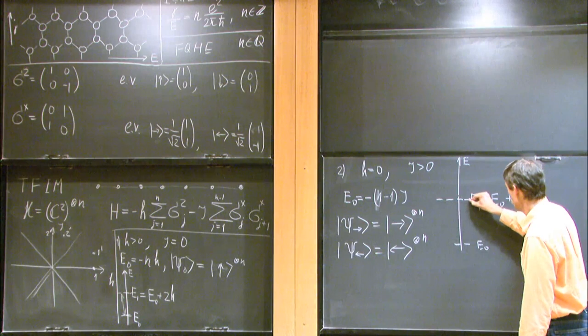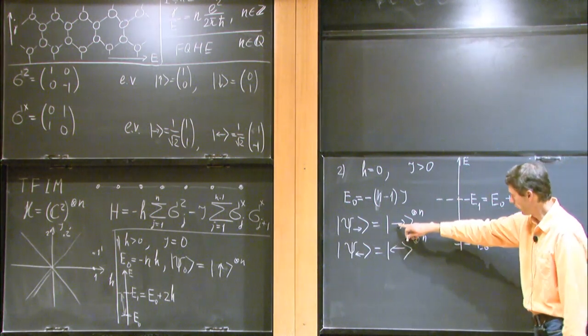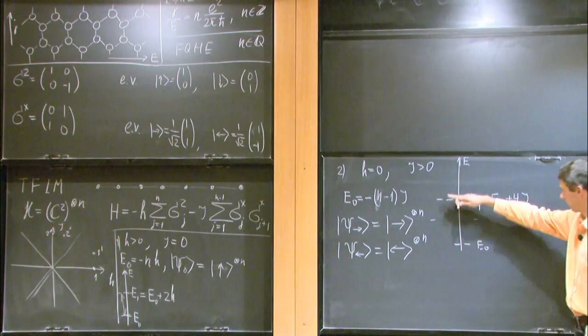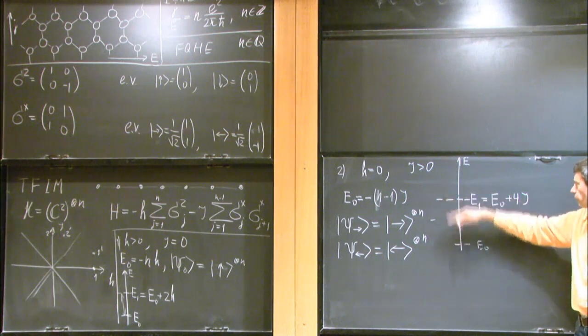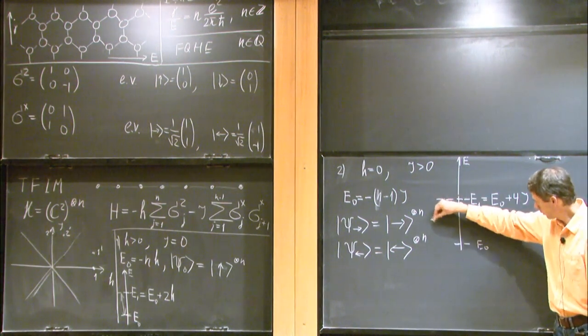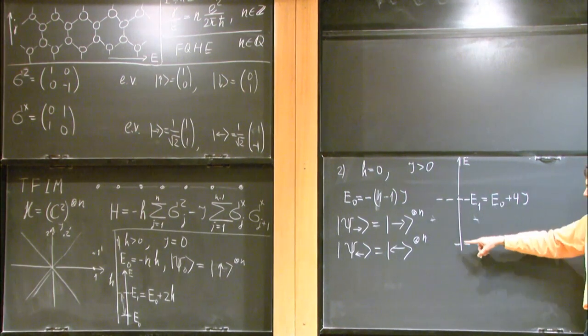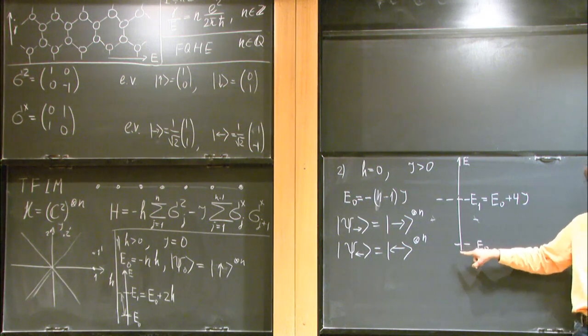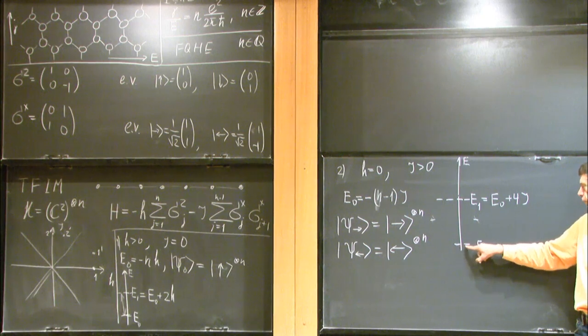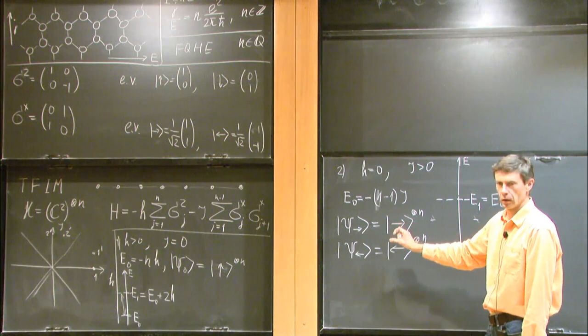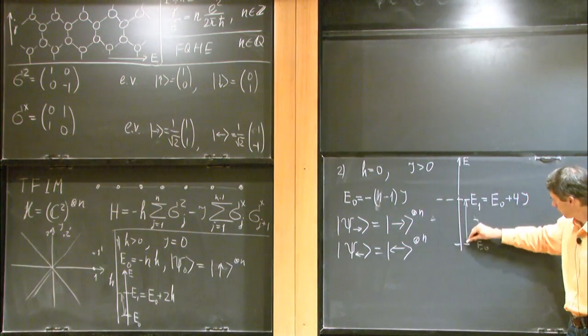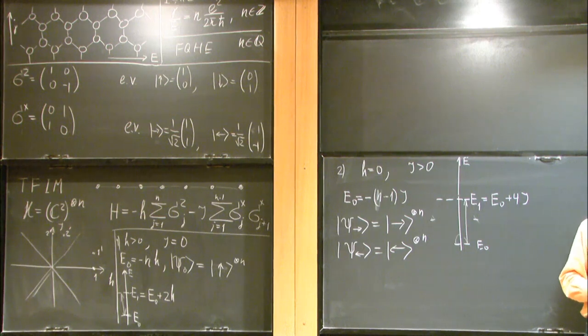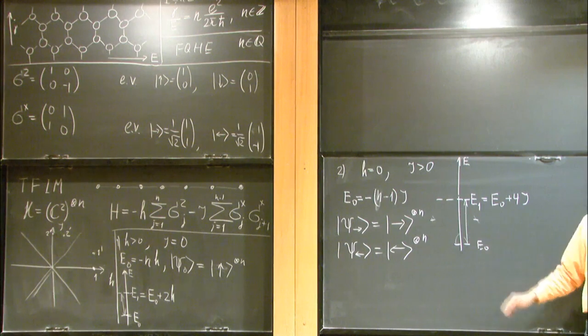And the spectrum looks like this. There are two degenerate ground states. Plus 4 J. And this is multiply degenerate, because we can flip any spin here. And if we flip the spins at the boundary, there are some spurious states with low energy right between these two. This will be ignored because we're ignoring what happens at the boundary. And also, there is a notion of a local energy gap.